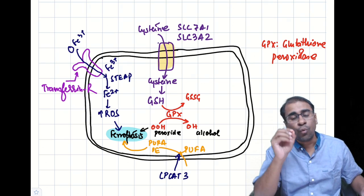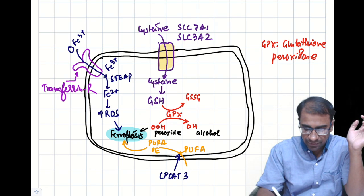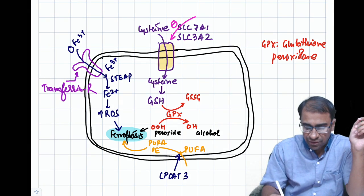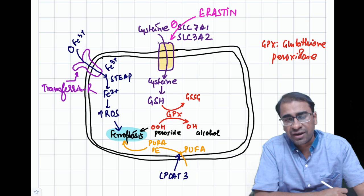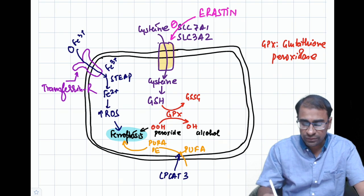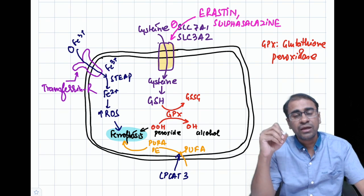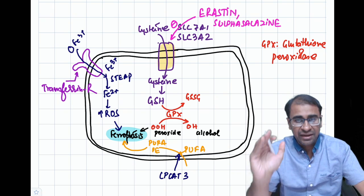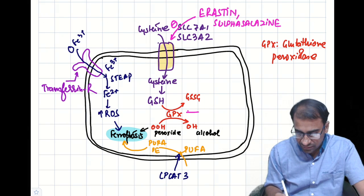So all three mechanisms — ROS from iron, transferrin receptor-mediated iron entry, and PUFA oxidation — ultimately cause ferroptosis. One way to induce it is direct inhibition of the SLC7A1 transporter. Drugs that do this include erastin (a chemotherapy drug used in some cancers) and sulfasalazine, which decrease cysteine uptake, reduce GSH, and increase ROS.